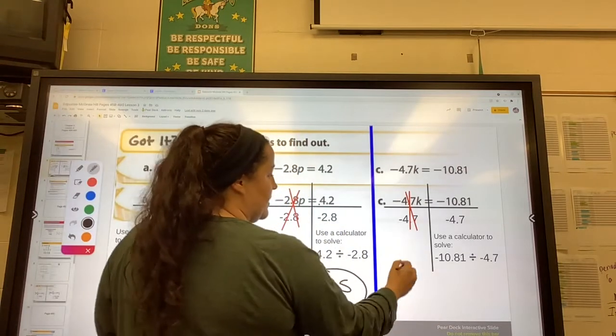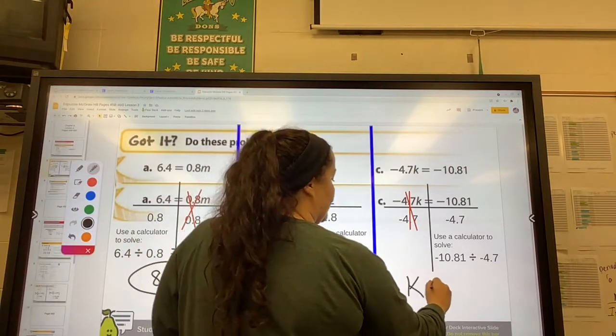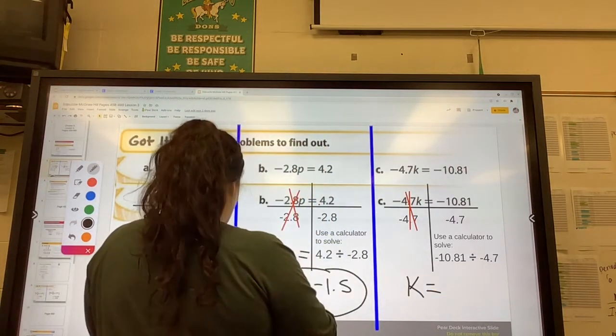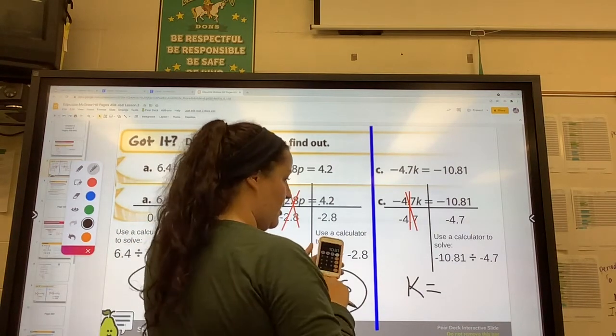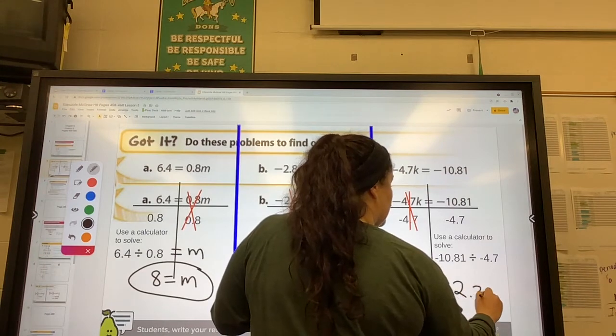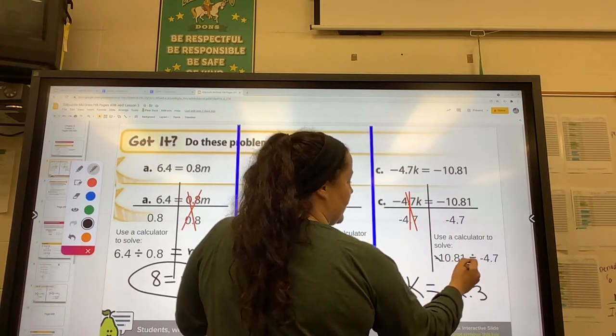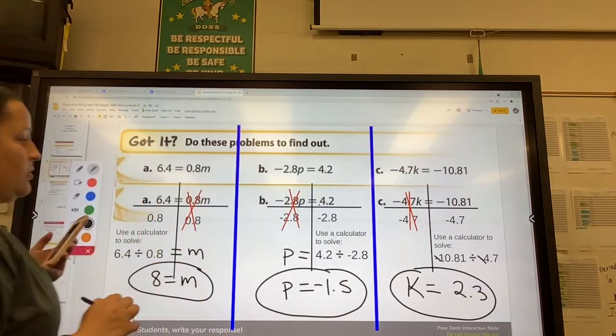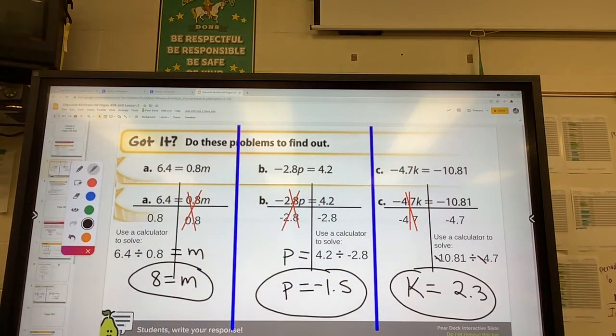Last but not least, K is left on that side equals, we have 10.81 divided by 4.7. That's 2.3. And since we have two negatives, they actually cancel out, so we're going to have a positive answer. So those are our answers for these problems.